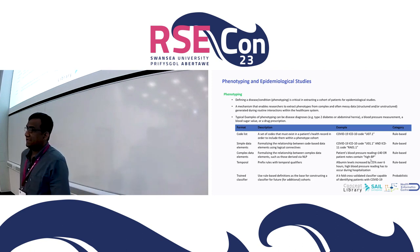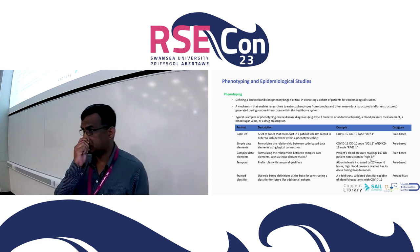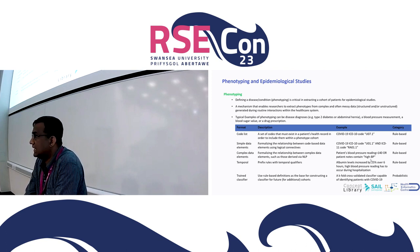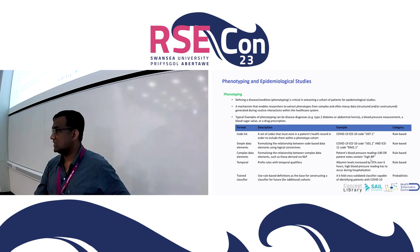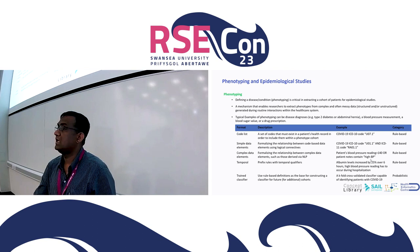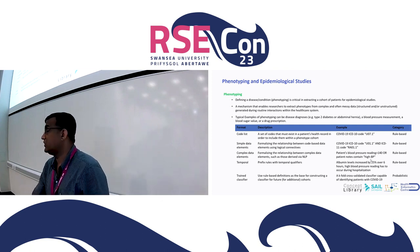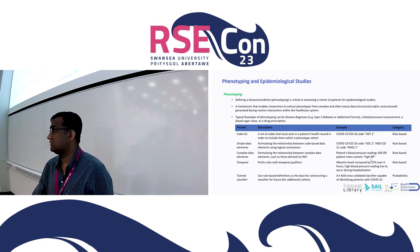What is phenotyping? Disease definitions or conditions, also known as phenotyping, is a critical step in extracting a cohort of patients for epidemiological studies. Phenotyping is a mechanism that enables researchers to extract phenotypes from complex and messy data generated during routine interactions within clinical healthcare systems. For example, type 2 diabetes or abdominal hernia are not recorded by name in clinical systems — rather, they are stored using clinical coding systems such as ICD-10, READ codes, SNOMED-CT, or others. A phenotype can be a list of clinical codes, or a more complex scenario involving NLP techniques from patient notes, or machine learning trained classifiers.